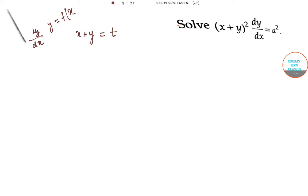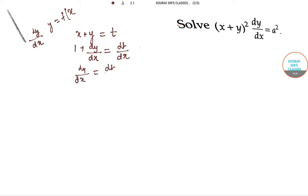Now differentiating both sides with respect to x: differentiation of x is 1, plus differentiation of y is dy/dx, and differentiation of t with respect to x is dt/dx. So we can write dy/dx = dt/dx − 1.